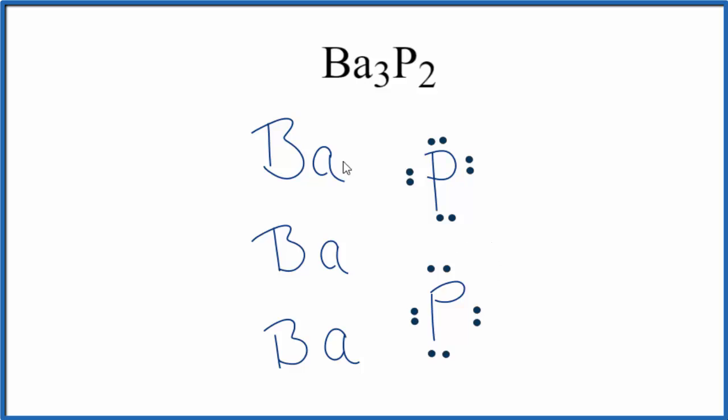So you can see why we need three barium atoms for the two phosphorus atoms. Phosphorus got three electrons. Electrons are negative, so it'll have a three minus ionic charge, each of these. Each barium lost two electrons. Those negative electrons, if you lose negative electrons, you become positive. Each barium, two plus.